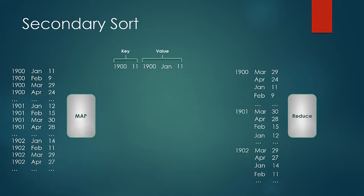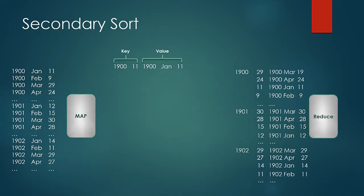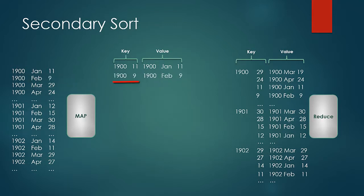Even if you were close to this approach but not certain, please accept my congratulations — you were on the right path. So now the input to the reducer would look as shown: the keys would be the combination of year and temperature, and the value would be the record. But what happens in this case is that another record 1900,9 would have a different hash code compared to the previous record with key 1900,11. And so these two records would go to two different reducers instead of the same reducer, which would not be a good case for us.